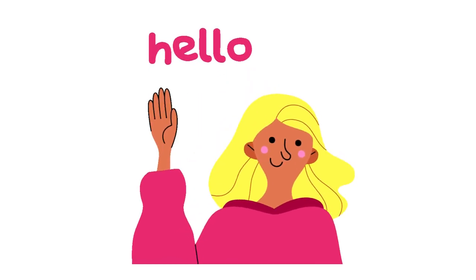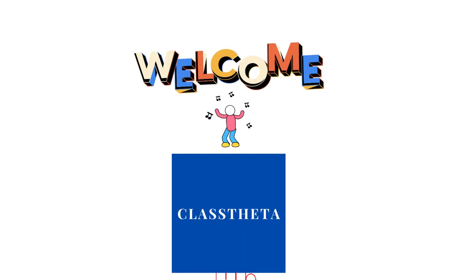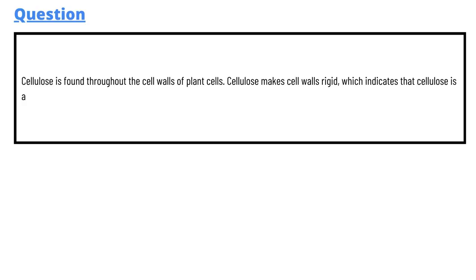Hello everyone, my name is Mr. Smart and I'm your teacher. I'll be teaching a different question and answer in this question and answer series by Class Tueta. So today's question which we'll be discussing is: Cellulose is found throughout the cell wall of plant cells. Cellulose makes cell walls rigid, which indicates that cellulose is a...